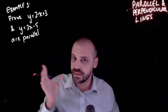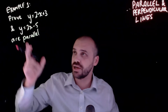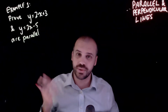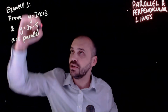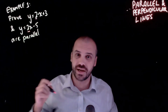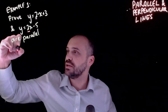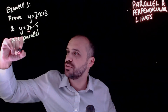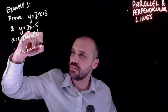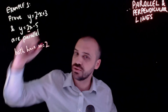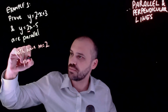A quick example question: prove y equals 2x plus 3 and y equals 2x minus 5 are parallel. We can see that the gradients are the same - both have m equals 2, therefore parallel.